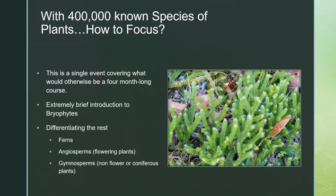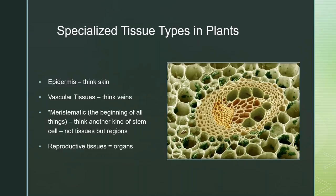Cycads and ginkgos are also gymnosperms. Plants have a lot of specialized tissue types just like any other organism: the epidermis, which is like the skin; vascular tissue, which is like the veins; the meristematic region — not a tissue but a focal point within the plant that is basically the stem cells of plants; and of course the reproductive tissues, which are organs like the flower or the fruit.